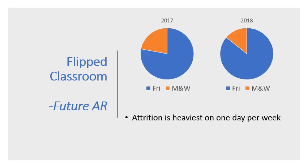One negative finding during this action research was not of the flipped classroom itself, but of the single eight-hour day section that meets one time per week. The largest portion of the attrition calculation came from students enrolled in this section — 78% of the attrition factor came from the Friday section in 2017, and 86% so far for the 2018 cohort. It is theorized this was attributed to students not acclimating their life schedule to more than just one day per week, whereas the two-evening-per-week section maintains more of a programmatic pace. Future action research must be conducted regarding this matter.